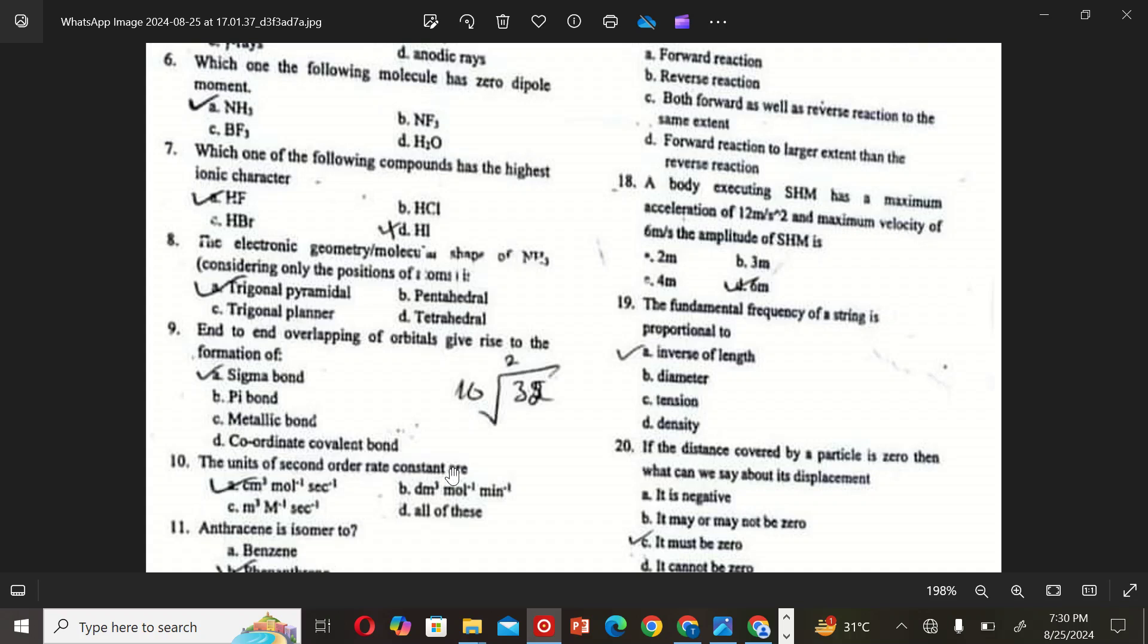The next MCQ is: The unit of second order rate constant R. Please find the answer of the second one because I don't know what the answer is.